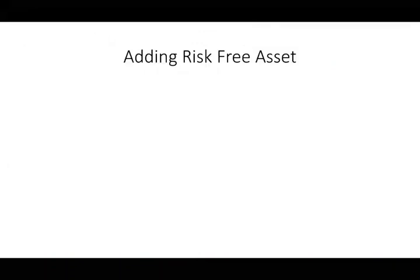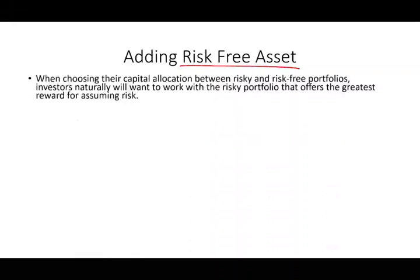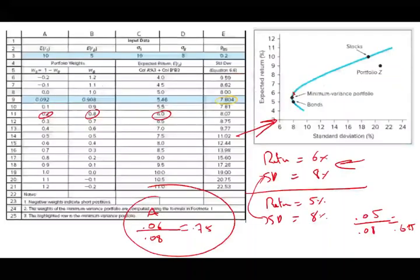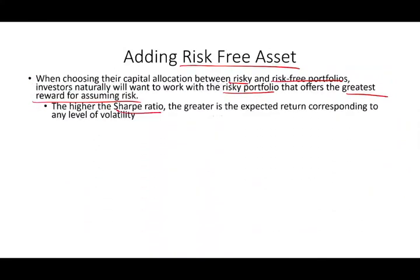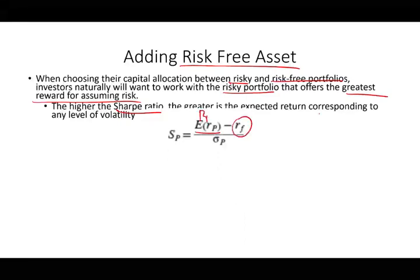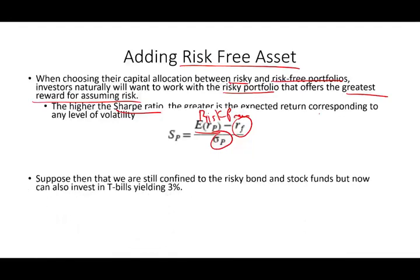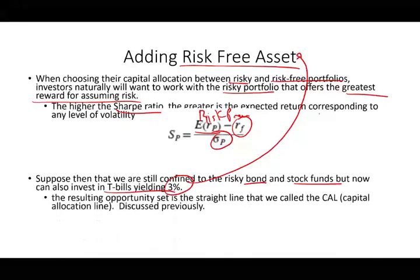Now, when choosing capital allocation between risky and risk-free portfolios, investors naturally want the risky portfolio that offers the greatest reward for assuming risk — measured by the Sharpe ratio. The higher the Sharpe ratio, the greater the expected return for any level of volatility. The Sharpe ratio formula is: expected return of the portfolio minus the risk-free rate, divided by the standard deviation. We can now add a T-bill yielding 3% as a risk-free asset to our picture.